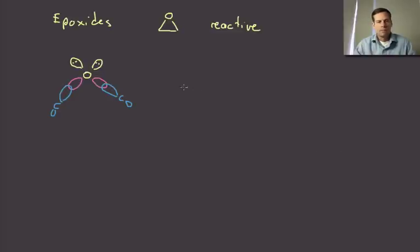If we envision the oxygen being sp3 hybridized, we know that the angle here wants to be approximately 109 degrees. And that's going to be optimal in order to get that good direct overlap between those two orbitals.